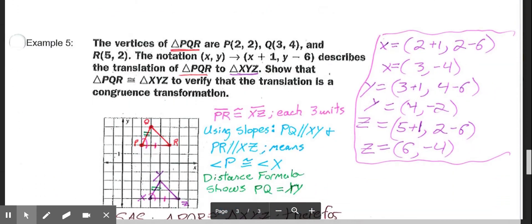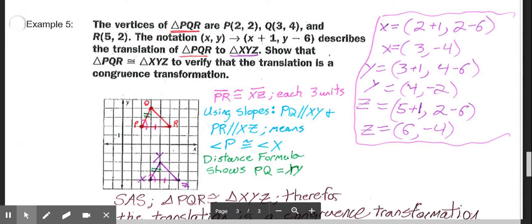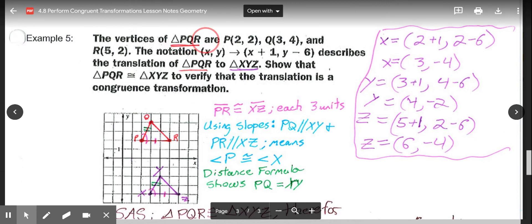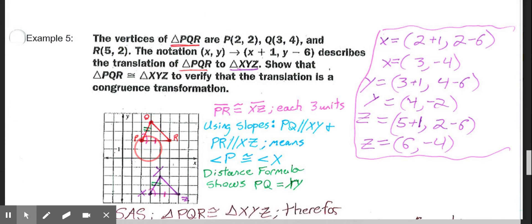And then we get down to example five, which is talking about our vertices of a triangle and verifying that the translation is a congruence transformation. In this case, we need to translate or slide a triangle and then we are going to show that it is still congruent. First things first, you want to just graph triangle PQR. So the points (2, 2), (3, 4), and (5, 2) right here. And connect those to create triangle PQR.